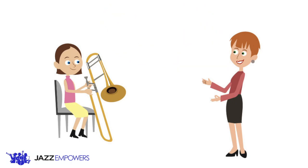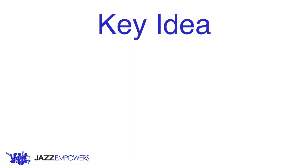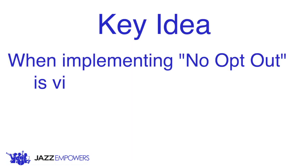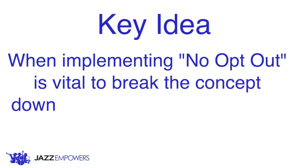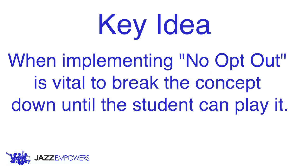In this example, the student either has a lower understanding of the scale, or for whatever reason just doesn't want to play it for the teacher. The everything response can easily frustrate a teacher, but it's important to break it down further. Once you break it down to something the student can play, even if it's just one note, it helps students realize that they can't opt out when asked to play something.